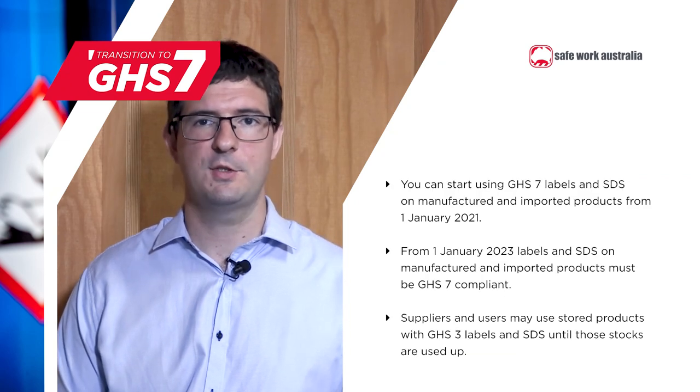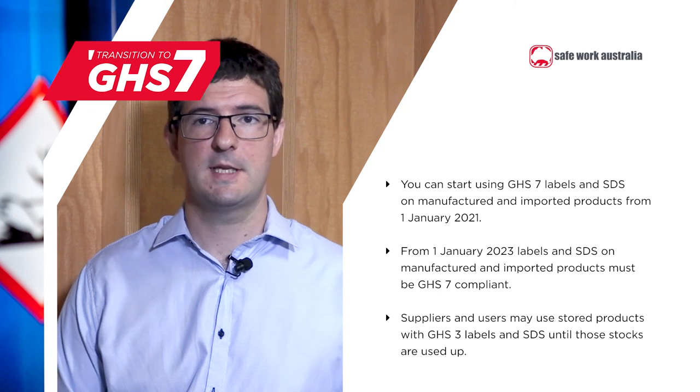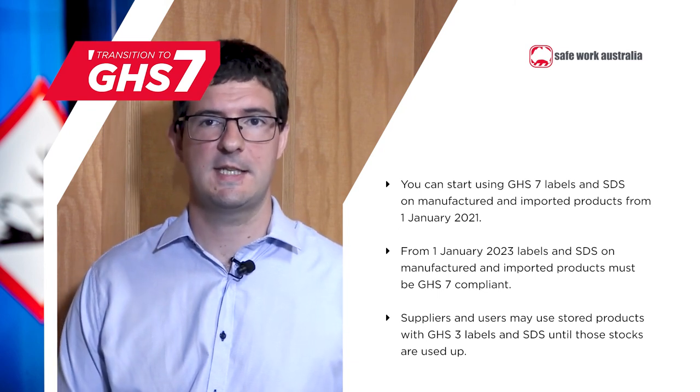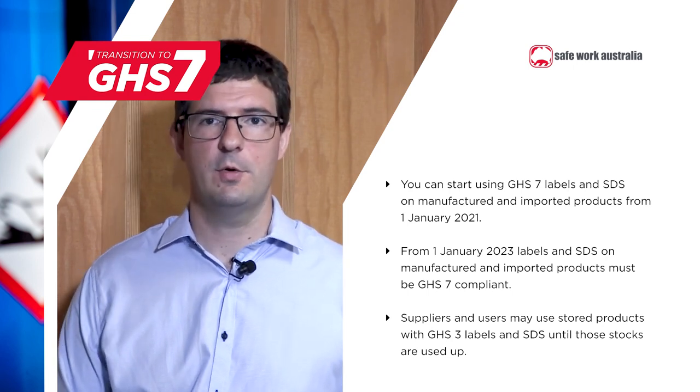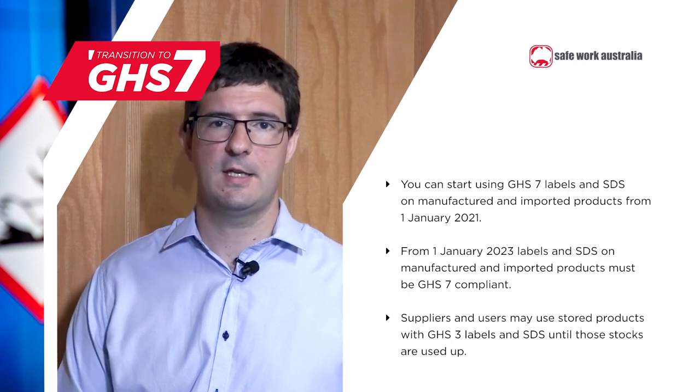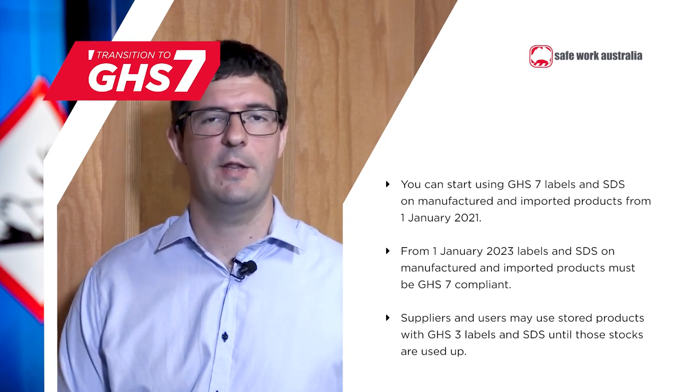Thanks for watching. Here are the key takeaway messages from today. Australia will begin a two-year transition to GHS7 on 1 January 2021. Until 31 December 2022, both GHS3 and GHS7 can be used for classifying chemicals and preparing labels and safety data sheets. If you manufacture and import chemicals, make sure that your classifications, labels and safety data sheets are up to date by 31 December 2022. We have guidance material and resources to help you on our website. Contact the GHS mailbox if you have questions — that's ghs@swa.gov.au.